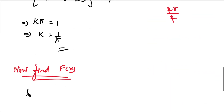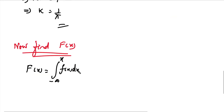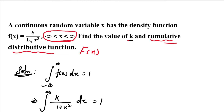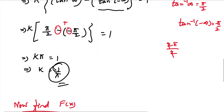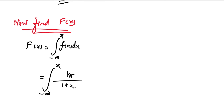For the cumulative distribution function, capital F of x, the formula is the integral from minus infinity to x of f(x) dx. Substituting f(x) equals k divided by (1 plus x squared), and using the previously found value k equals 1/pi, we substitute 1/pi in place of k. This gives the integral from minus infinity to x of [1/pi divided by (1 plus x squared)] dx.